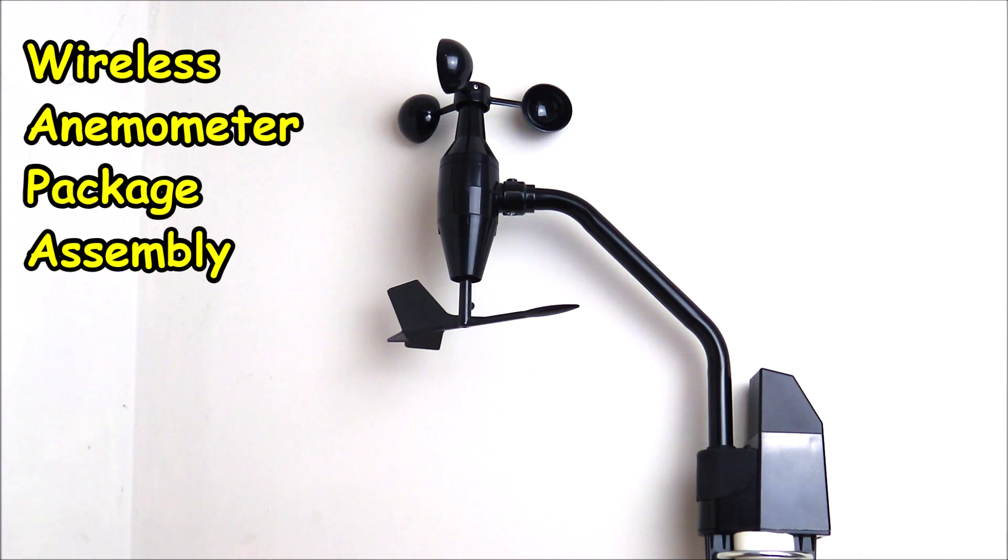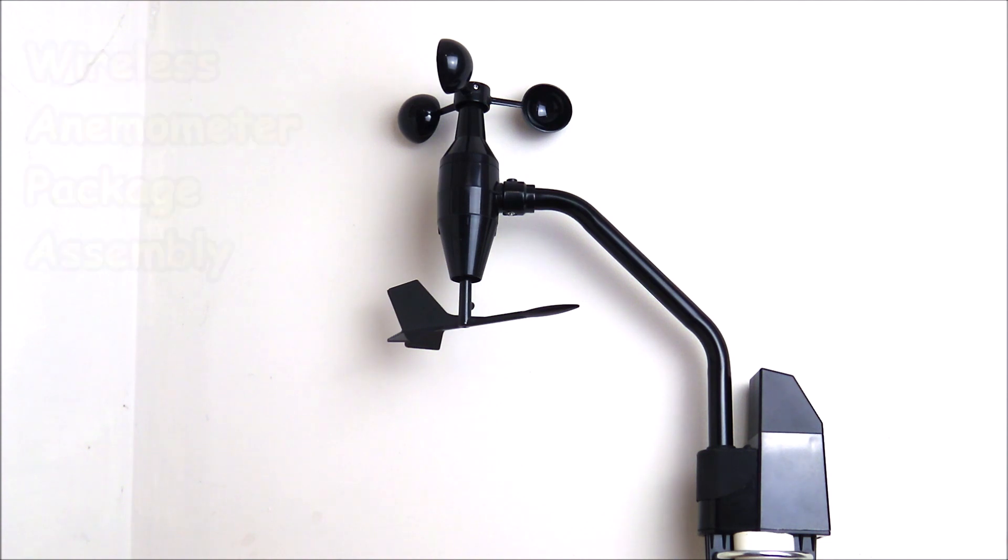The wireless anemometer package assembly comes in four main sections. You have the wind cups on top, the wind vane underneath, the main unit, and the mounting brackets. The actual pole itself is not included.